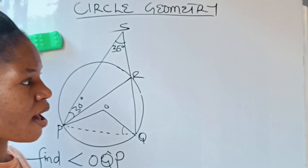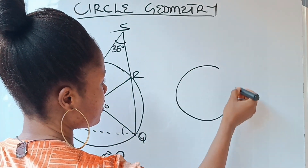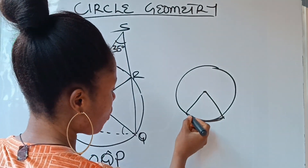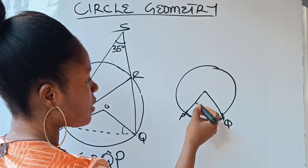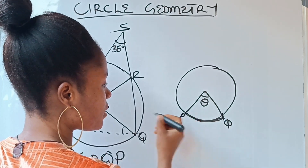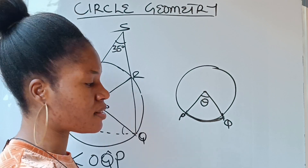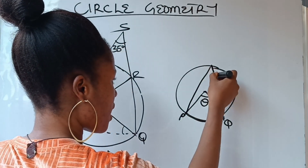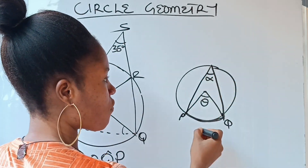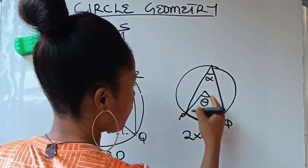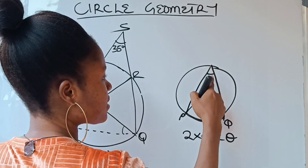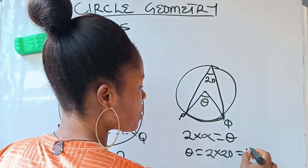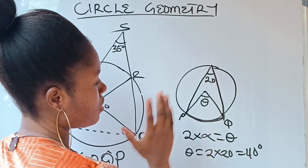I want to introduce this theorem of a circle: if this is a circle and this is the center, and you have an arc BQ, the angle that arc BQ subtends at the center — call it theta — is two times the angle that BQ subtends at the circumference, which we call alpha. So for example, if alpha is 20 degrees, then theta equals two times 20, which is 40 degrees.